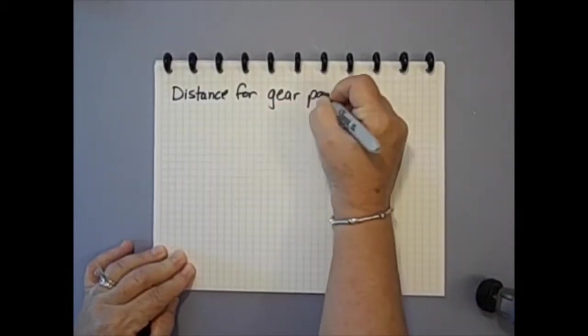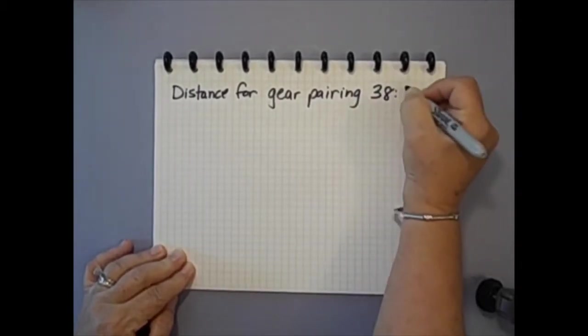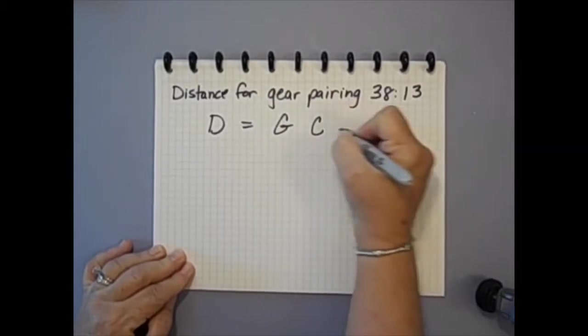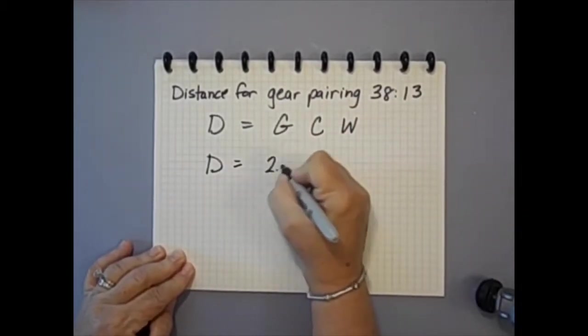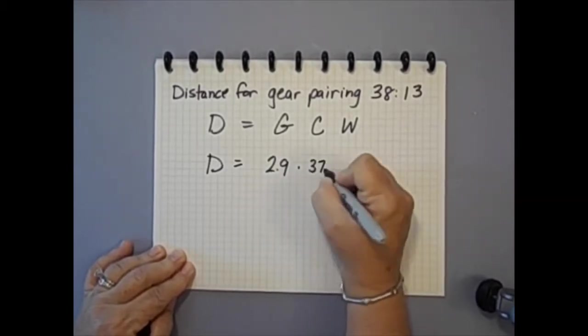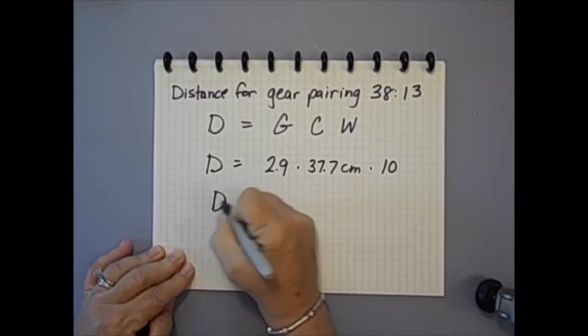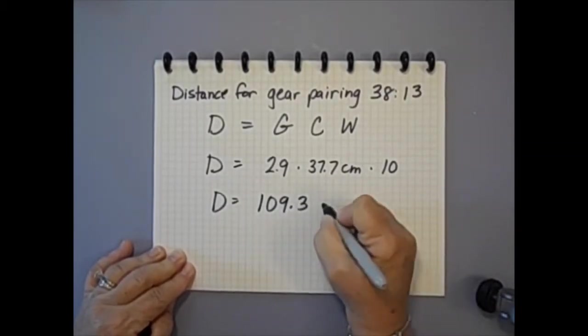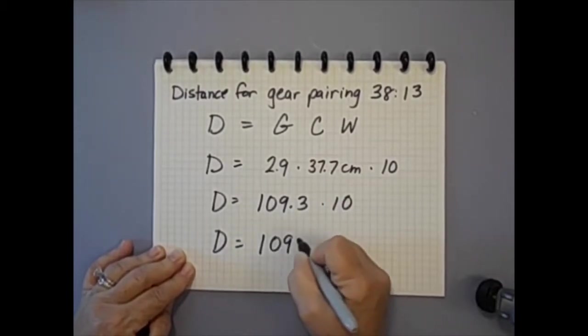So how far will a car with CD wheels, 10 string wraps, and a gear multiplier of 2.9 travel? Let's do the math. D equals GCW, so D equals G 2.9 times C 37.7 centimeters times W 10 string wraps and that equals 1093 centimeters, which is about 400 centimeters farther than the 40-20 pairing reviewed earlier.